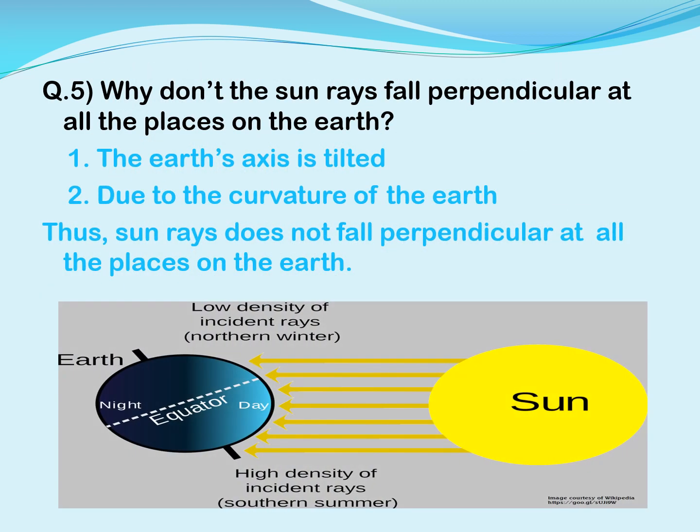The next question is: why don't the sun rays fall perpendicular at all the places on the Earth? There are two reasons behind this. First, the Earth's axis is tilted, making an angle of 23.5 degrees. Second, the curvature of the Earth — meaning the circular shape of the Earth. Because of these two reasons, the sun rays do not fall perpendicular at all places on the Earth.